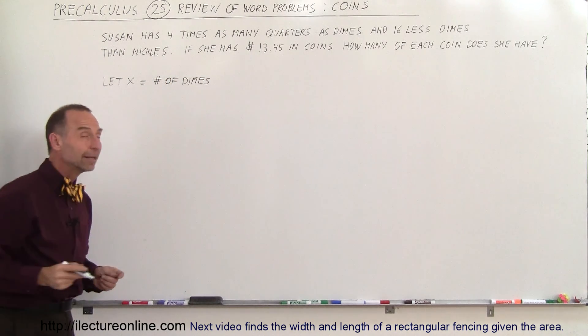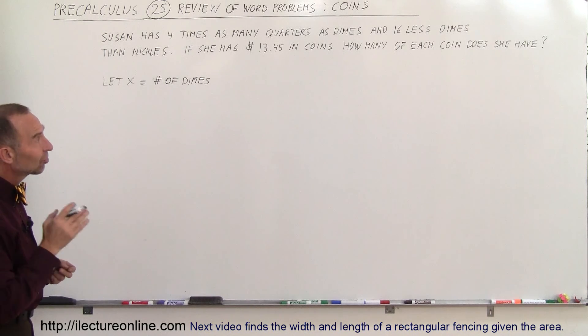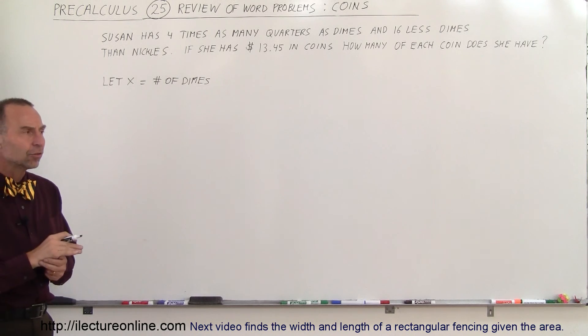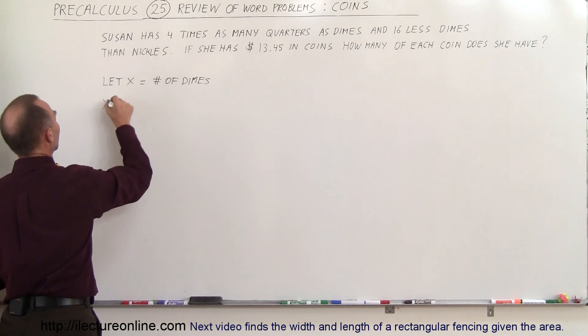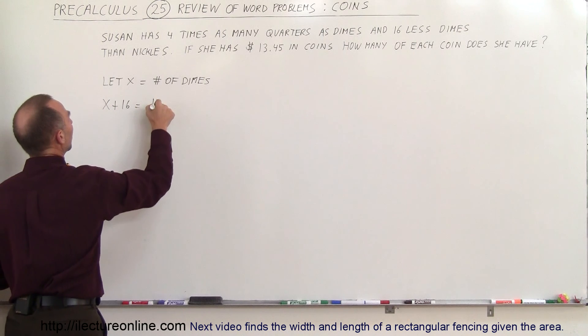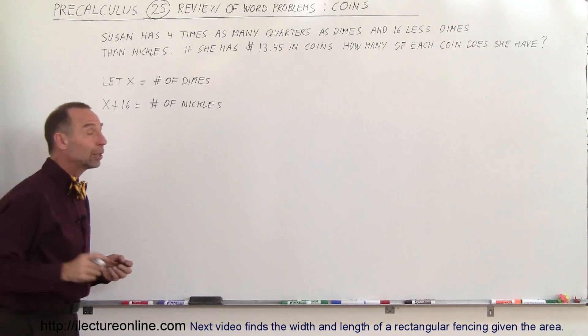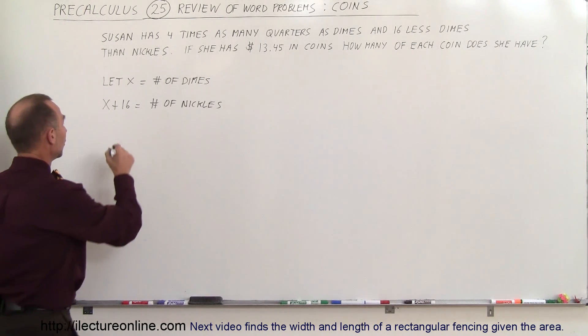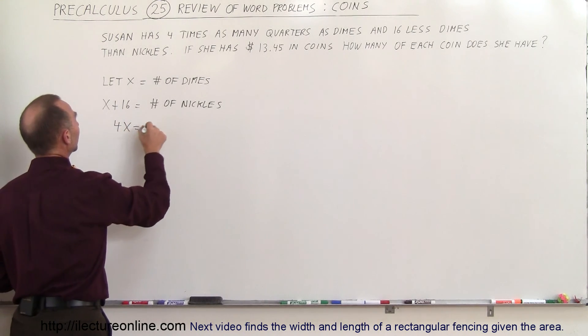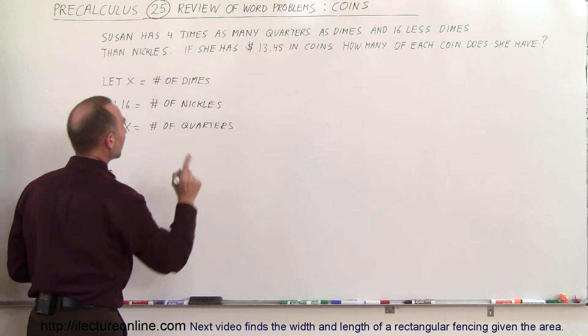So if she has X number of dimes and she has 16 less dimes than nickels, that means 16 more nickels than dimes. So X plus 16 would equal the number of nickels. And finally, how many quarters does she have? She has four times as many quarters as dimes. So therefore, four times X is equal to the number of quarters.